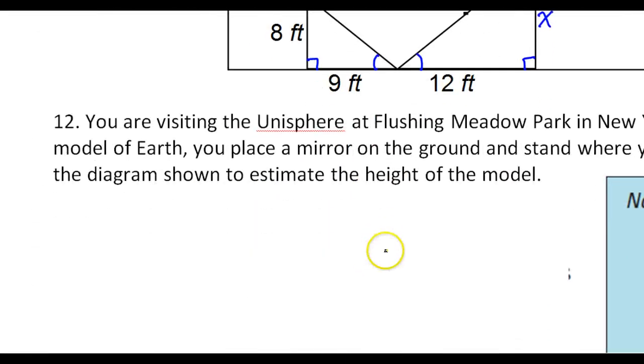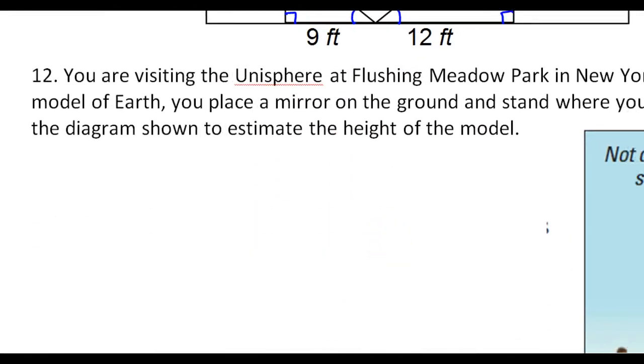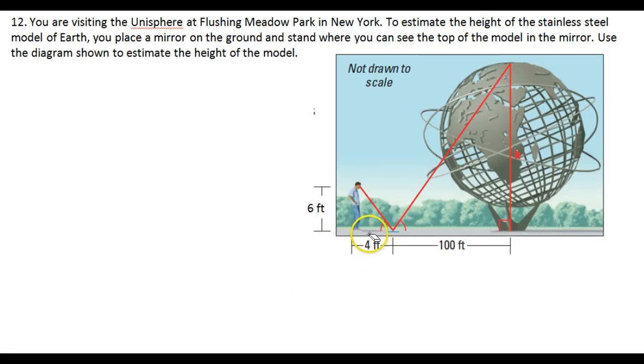Let's look at problem number 12. Number 12 is showing one of the practical uses of similar triangles. If you put a mirror on the ground in front of a tall object and you want to estimate the height of that object, you put that mirror on the ground, look at the mirror, and put it just at the right spot where you can just see the top of the thing that you're trying to measure in the mirror.